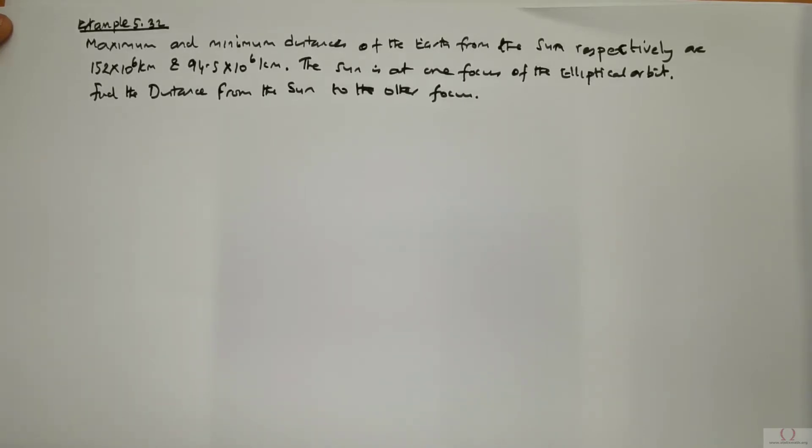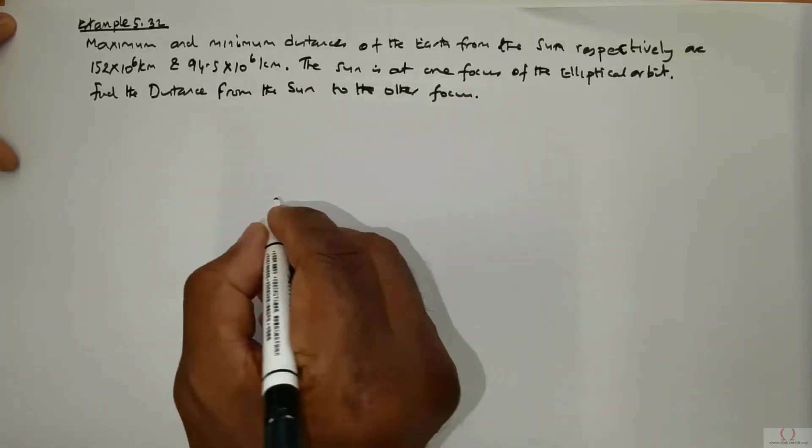The sun is at one focus of the elliptical orbit. Find the distance from the sun to the other focus.